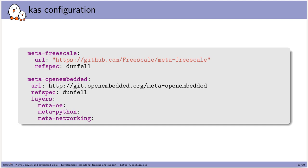kas automatically generates bblayers.conf from the layers listed in the configuration file. Each repository has a refspec field — similar to the revision in a repo manifest. When you're ready to release, you just switch the refspec to a specific commit hash or tag, then tag your own layer containing that configuration file, ensuring the same sources are always downloaded for that release.